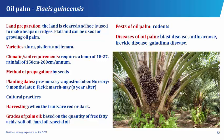The oil palm is harvested when the fruits are red or dark. Palm oil is graded based on the quantity of free fatty acids into the soft oil, the hard oil, and the special oil. The pests that attack oil palm are the rodents. While diseases suffered by oil palm are the blast disease, the anthracnose, the freckle disease, and the galadima disease.